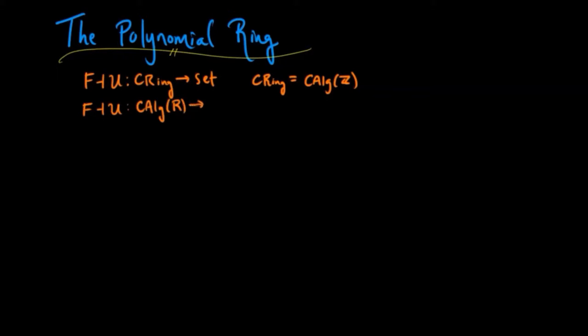Then given any commutative ring R, we can form a free-forgetful adjoint situation from commutative algebras over that ring R to Set. The forgetful functor can be given as co-representable with the representable object being the polynomial ring over one variable, or univariate polynomial ring.